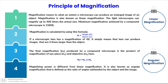Magnifying power is different from linear magnification and is also known as angular magnification. It is defined as the ratio of the angle subtended by the image to that subtended by the object.